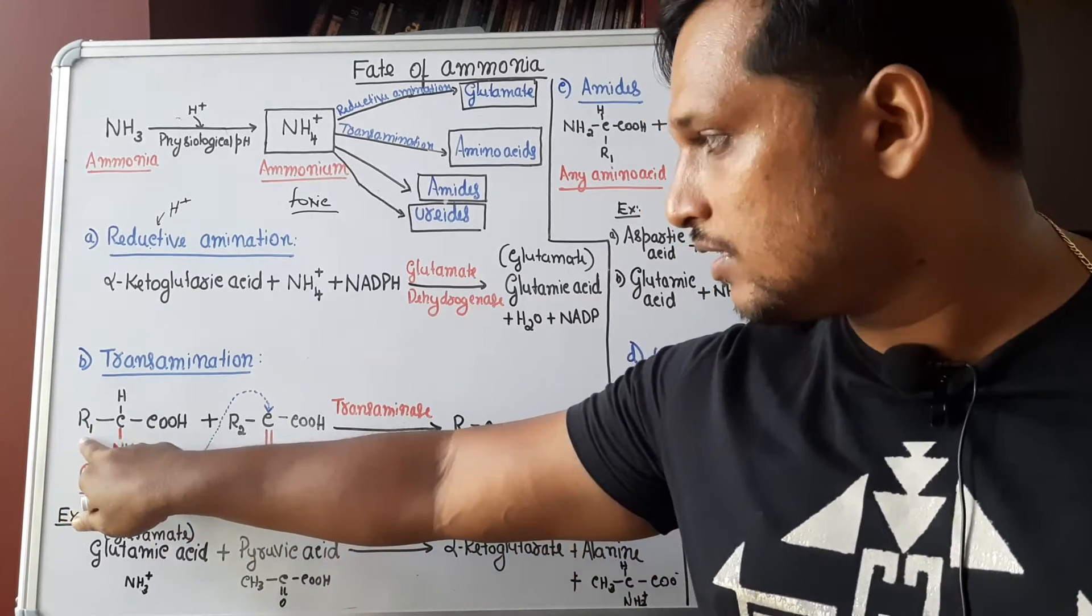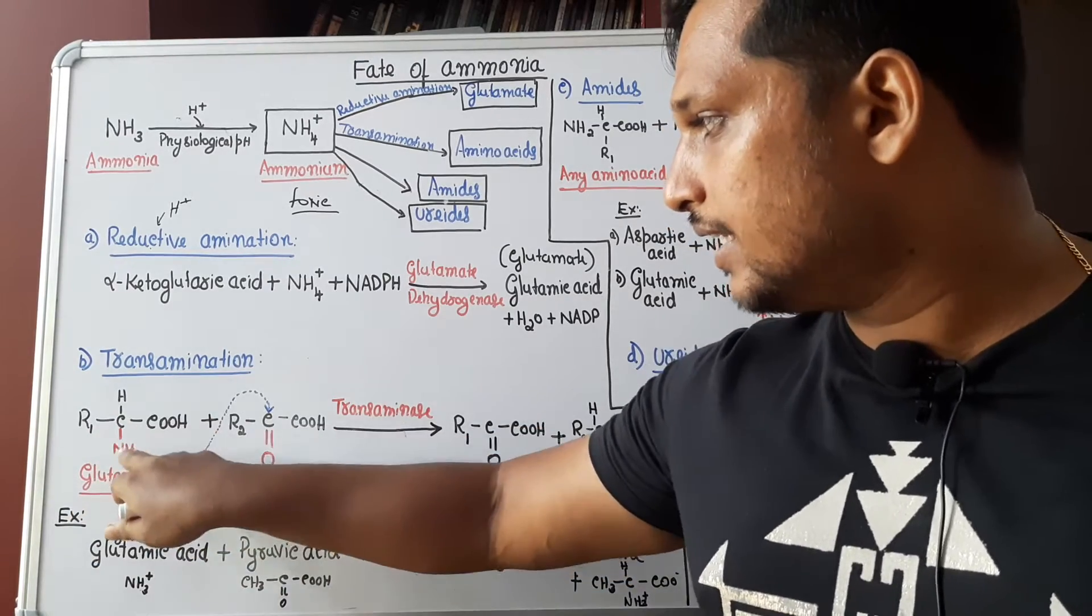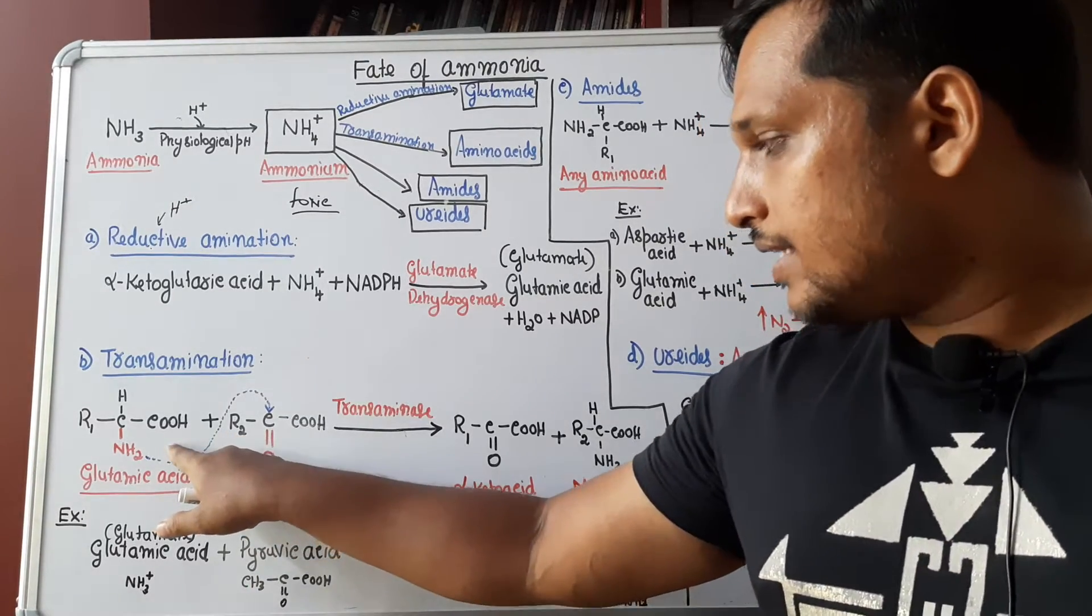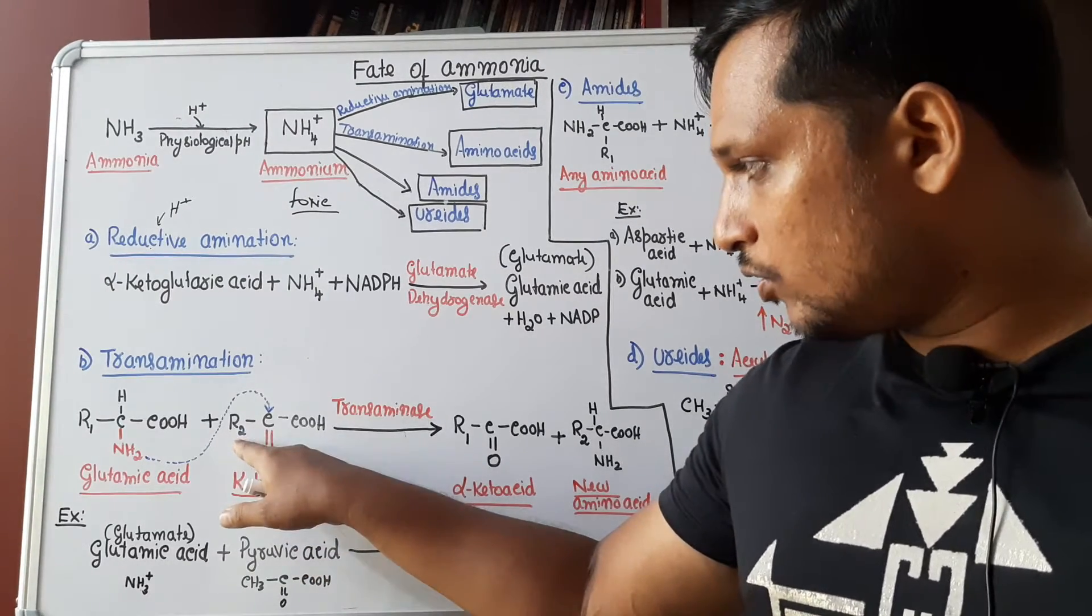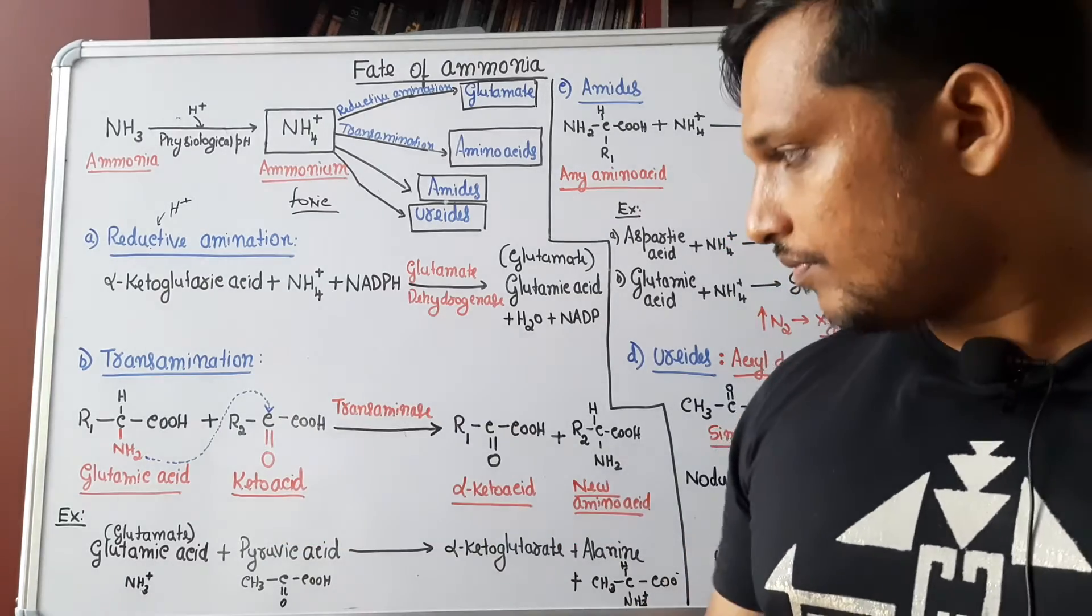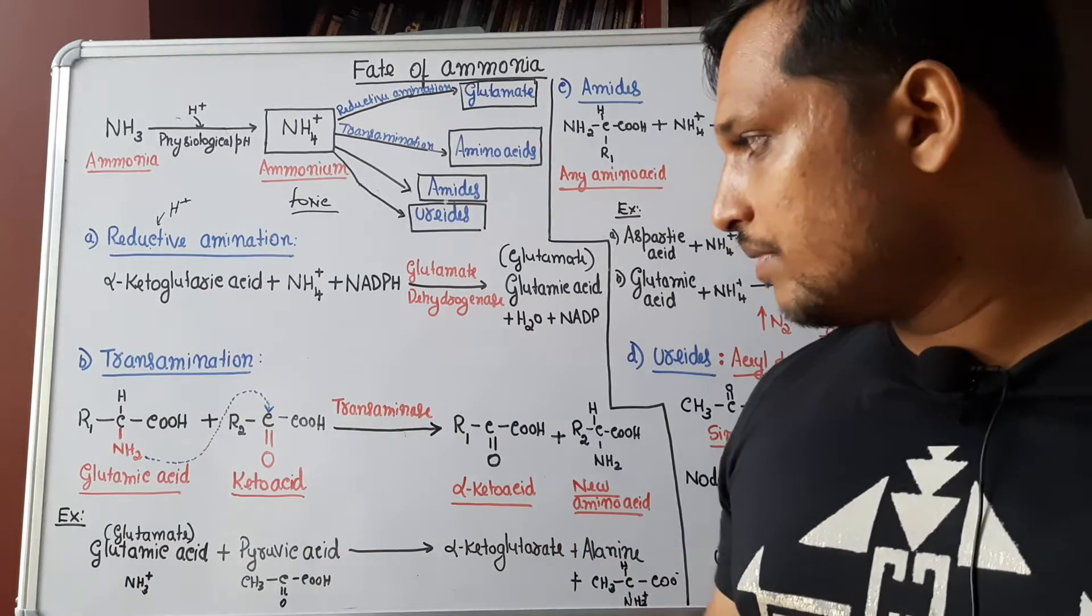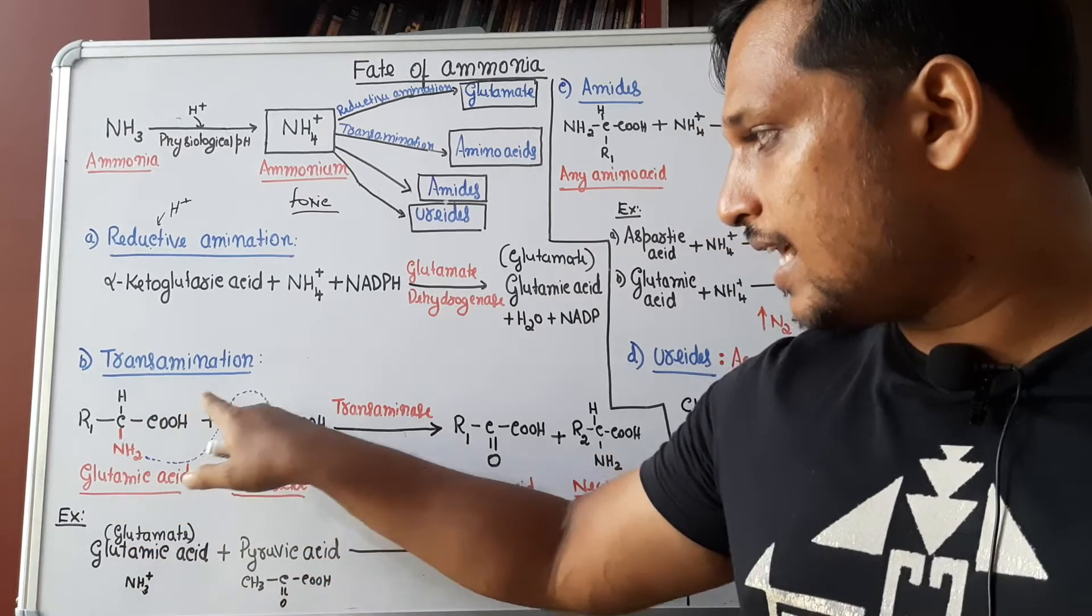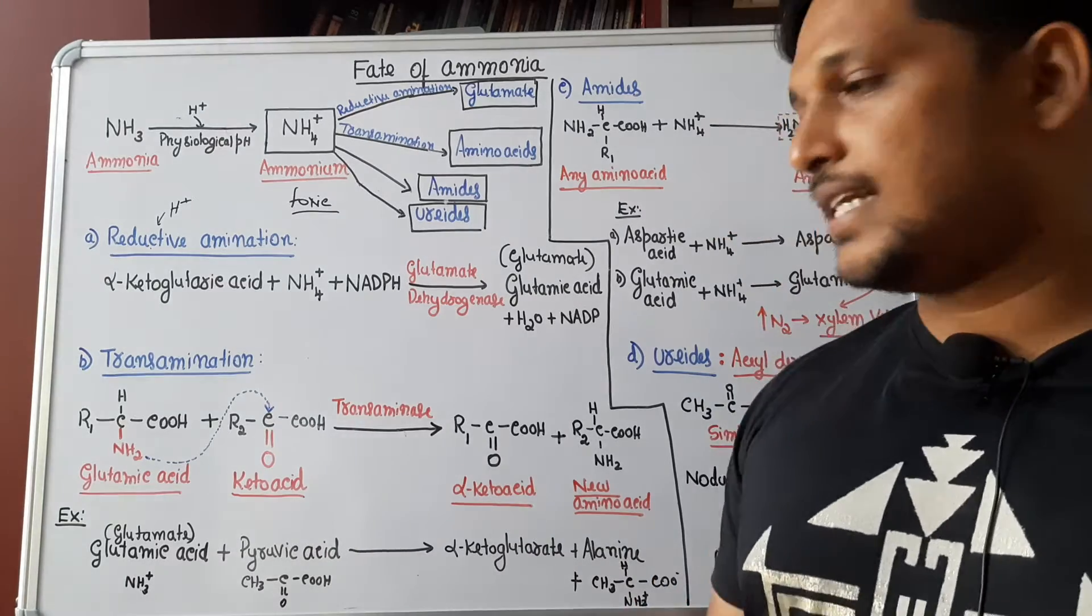R, R can be any functional group. I have not represented. Let us keep it as R1 for glutamic acid. CH, NH2, COH. This is one amino acid, glutamic acid. Amino acid reacts with a ketoacid. Look at the ketoacid. R2, its functional group and the ketone group and the acid. Reacts with ketoacid in the presence of transaminase enzyme. What happens is amino group from amino acid is transferred to the ketoacid. That is known as transamination.